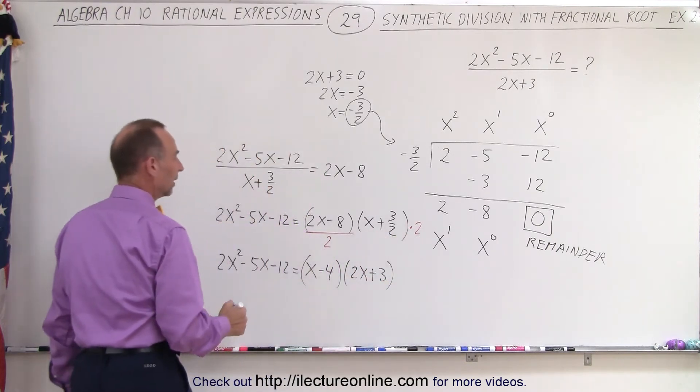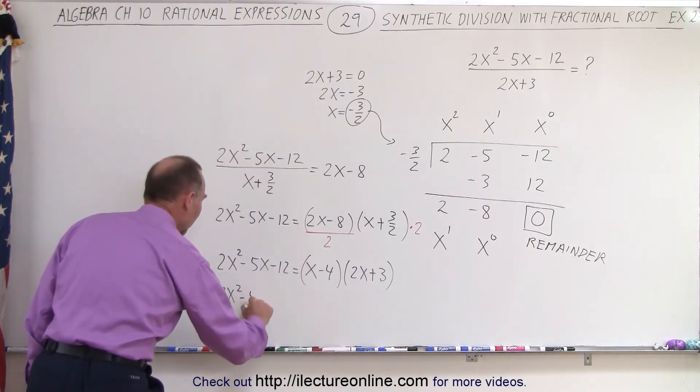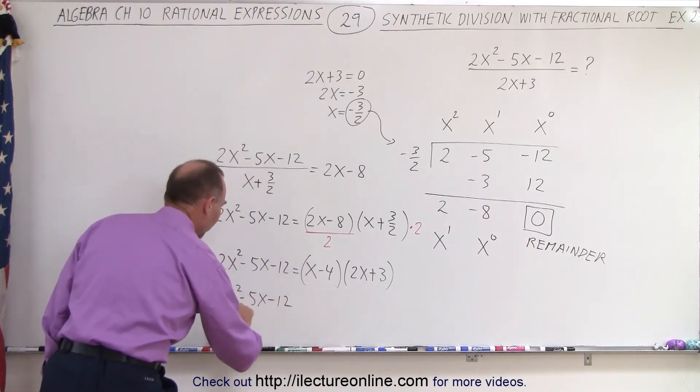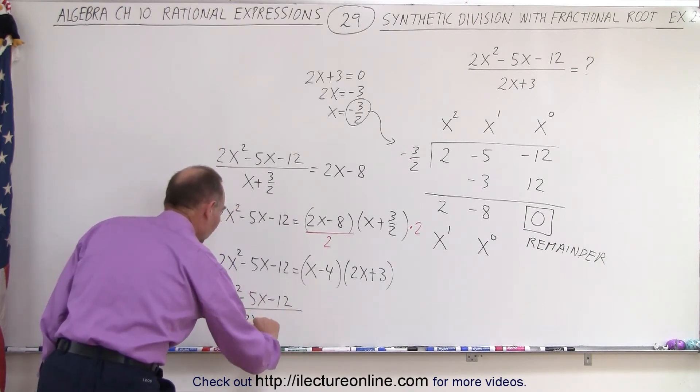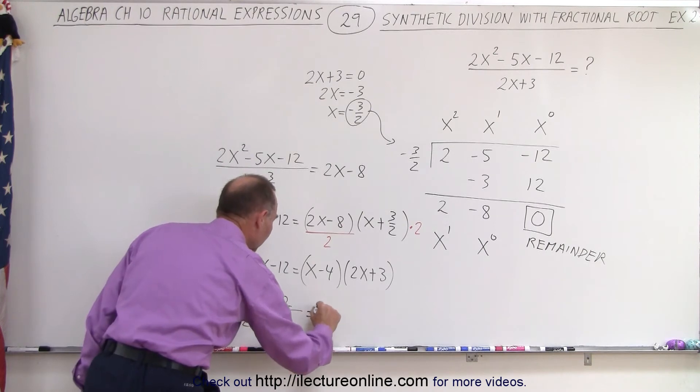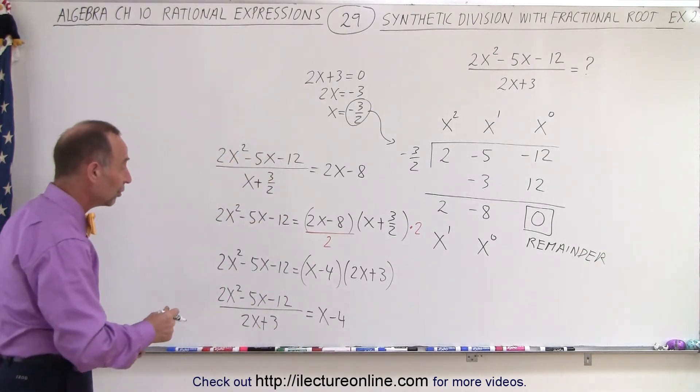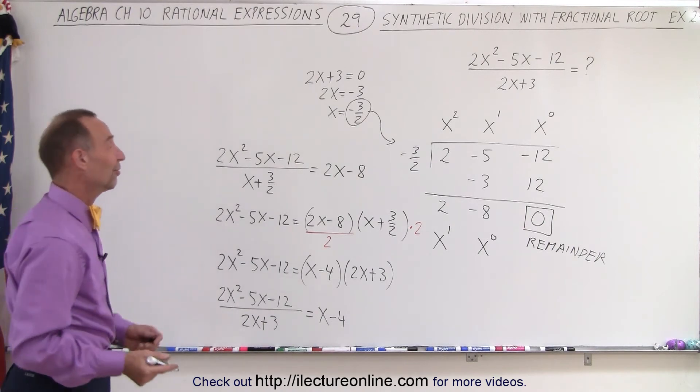we end up with 2x squared minus 5x minus 12 is equal to x minus 4 multiplied times 2x plus 3. And then if we bring this over here, we can write that 2x squared minus 5x minus 12 divided by 2x plus 3, which is what our original problem was, we know that now equals x minus 4.